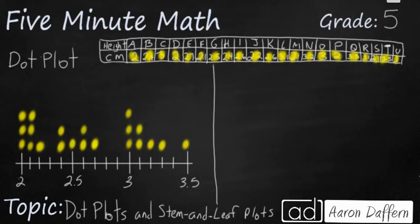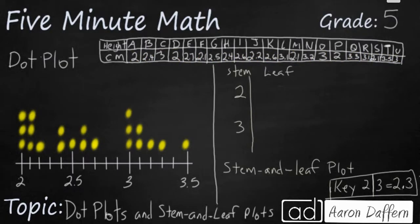Now let's see what this looks like on a stem and leaf plot. A stem and leaf plot is another way to represent the same data from the table, but instead of using dots on a number line, it uses two components: a stem and leaves. In this case our stem is going to be 2 and 3 because that represents the whole numbers, and our leaves are going to be the decimals. The most important part of any stem and leaf plot is the key — you always need to look for the key to know exactly how to read it. So a 2 in the stem and a 3 in the leaf equals 2 and 3 tenths, or 2.3.